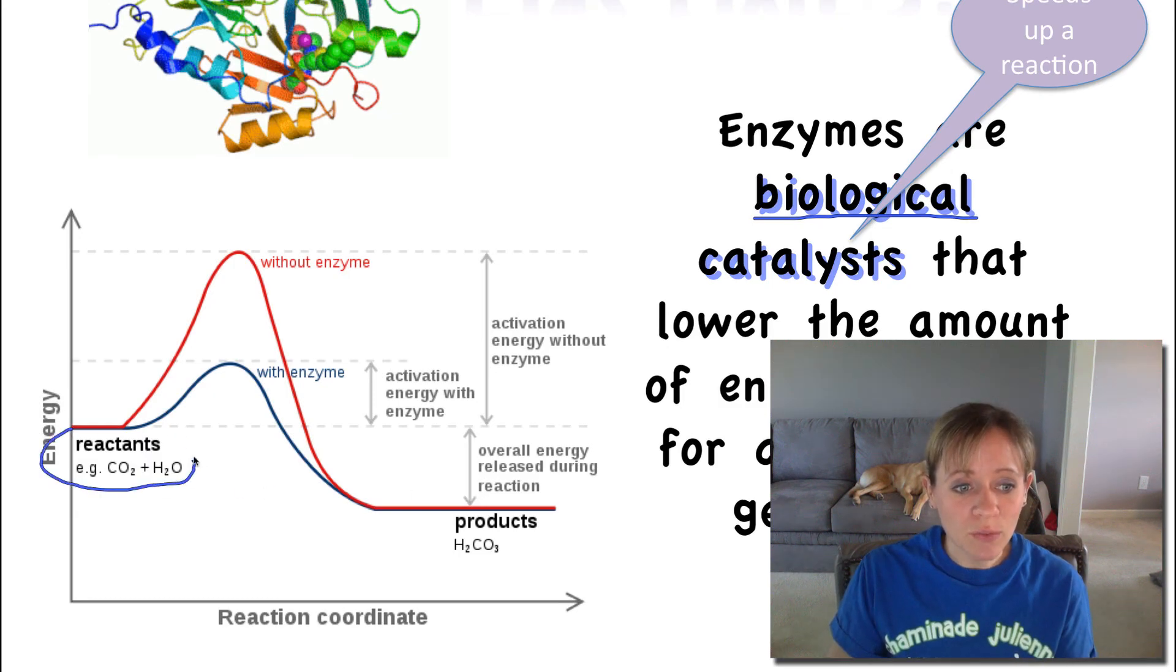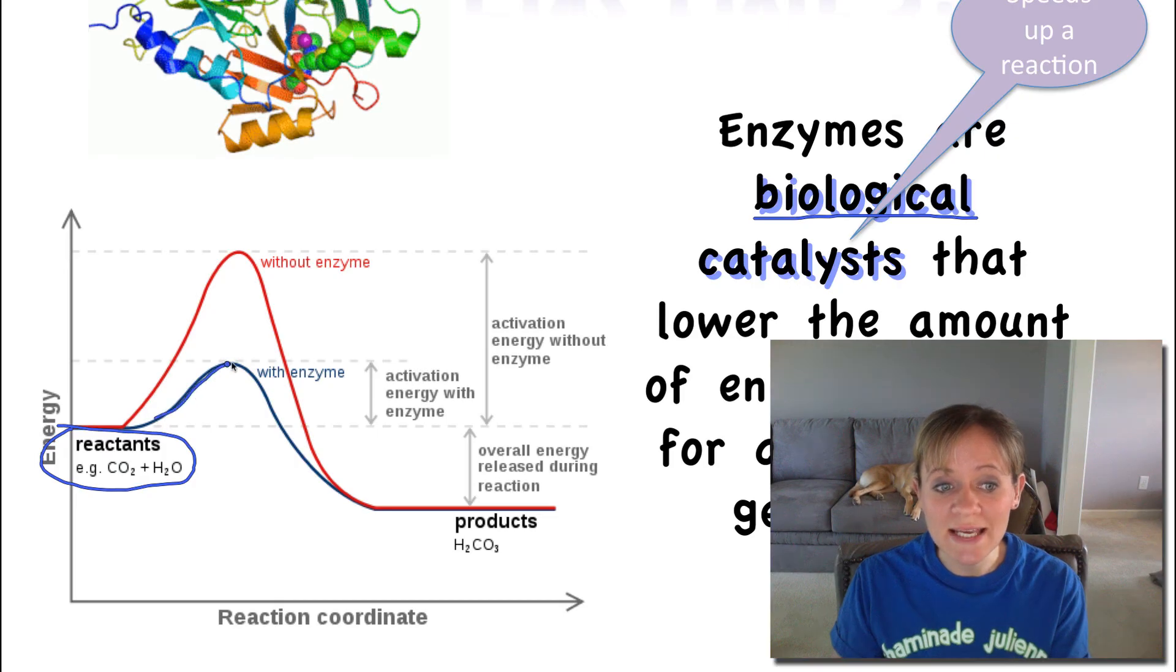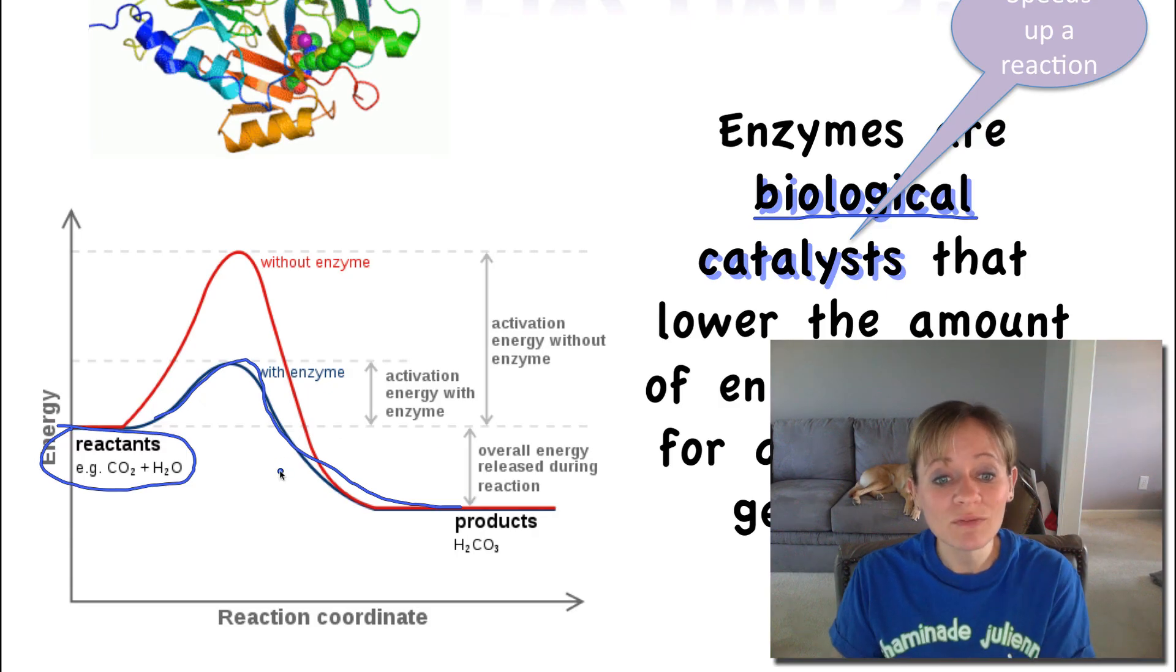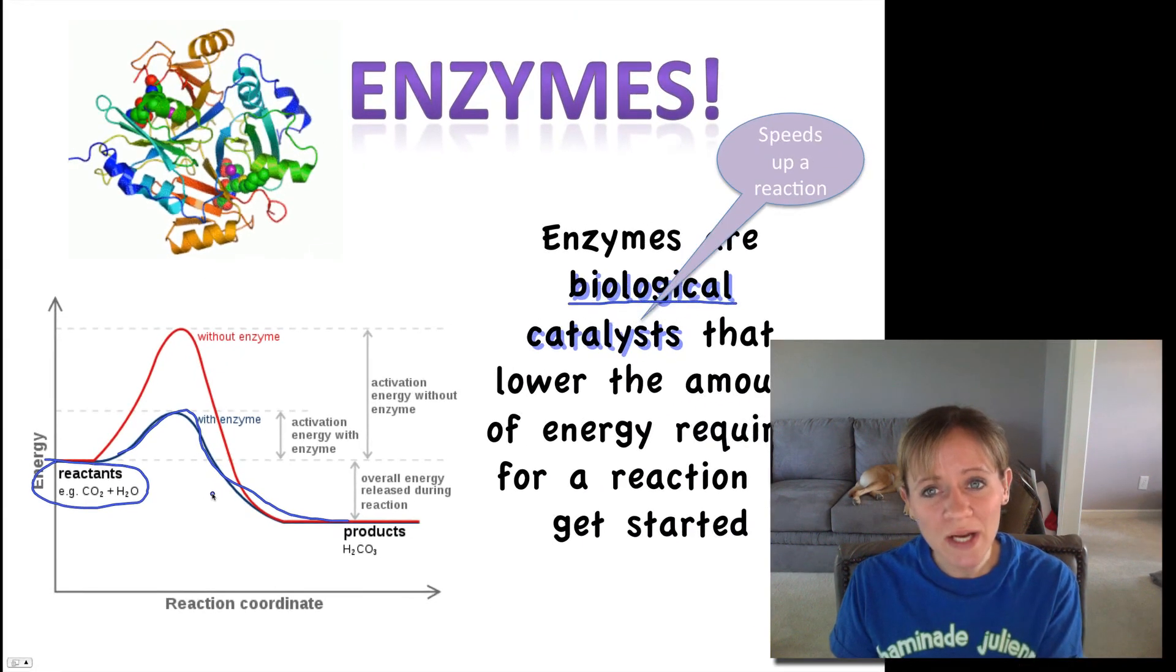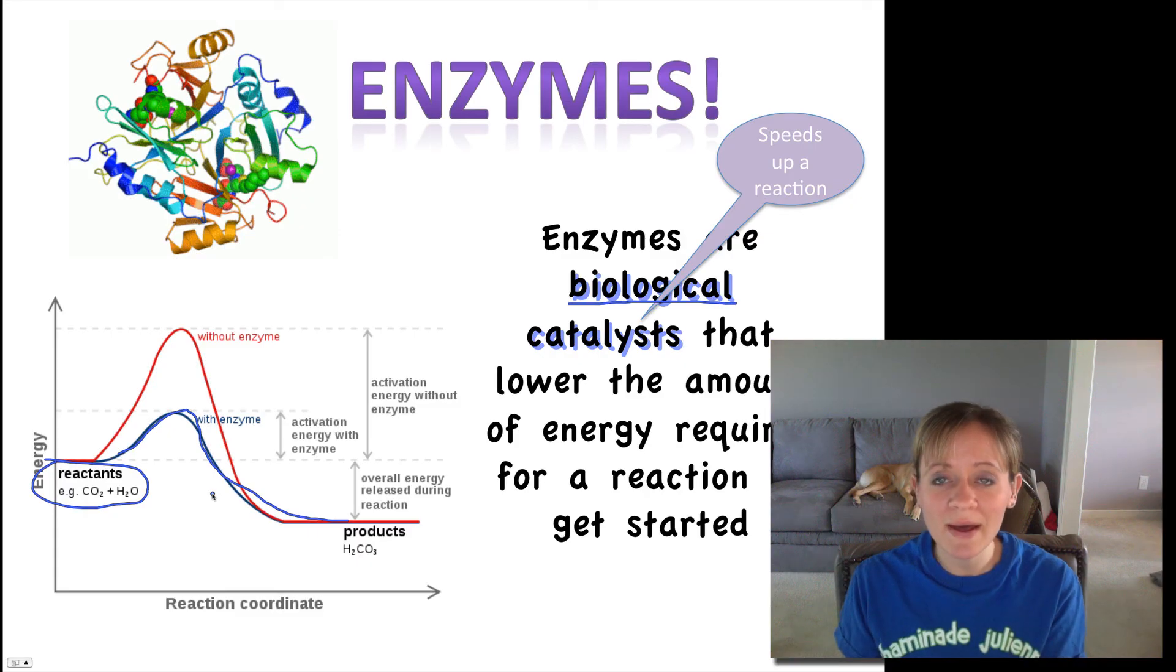This will make a lot more sense after you see this. So here are our reactants and we're trying to get to our products, right? Well, in red, without an enzyme, it's going to take a whole bunch of energy initially to get that started. So here's energy over here. But when we add an enzyme, look how that amount of initial energy is lowered. We don't have to put that much energy in to get it started. Therefore, we don't have to wait as long for the energy to accumulate, and the reaction simply goes faster. So that's what enzymes do. They lower that amount of initial energy required to get that reaction going.